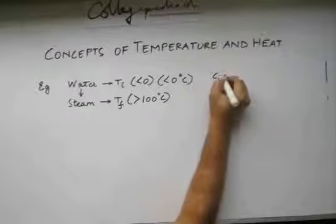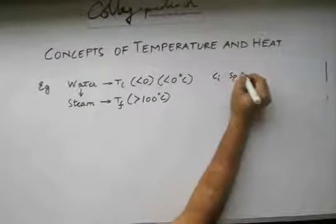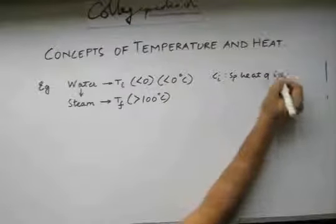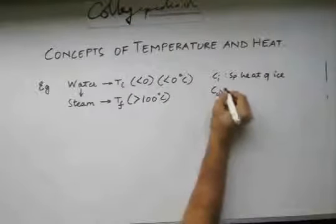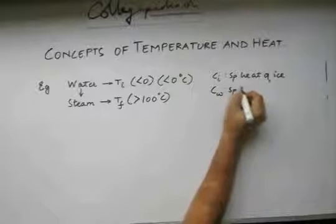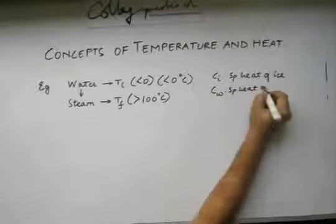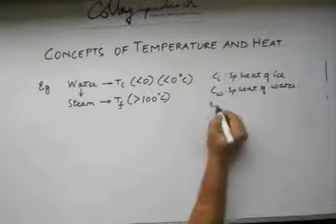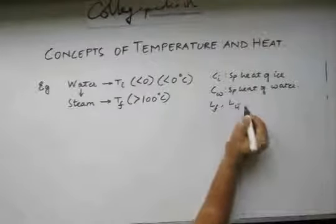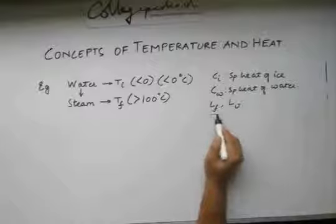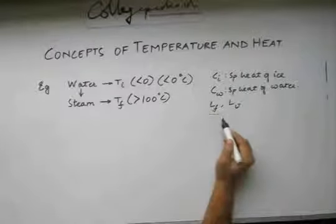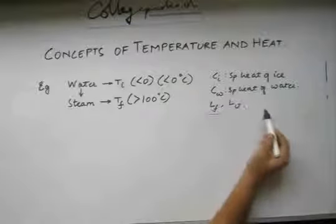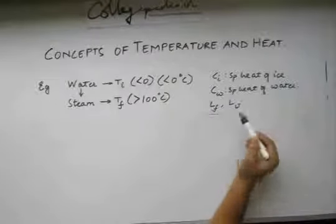Let us define some quantities. Ci is the specific heat of ice. Cw is the specific heat of water. Lf and Lv have their basic meanings: Lf is the latent heat of fusion from water to ice, and Lv is the latent heat of vaporization from steam to water.